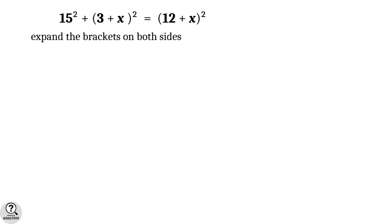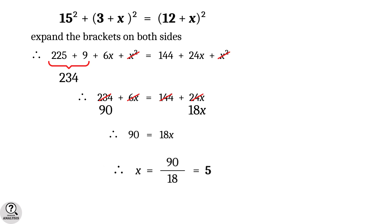Open the brackets and expand the equation. That gives 225 plus 9 plus 6X plus X square equal to 144 plus 24X plus X square. The term X square cancels. What remaining here is 234 plus 6X equal to 144 plus 24X. On simplification we get 18X equal to 90. That is X equal to 5 units.